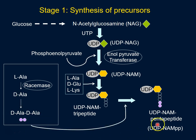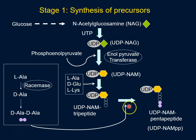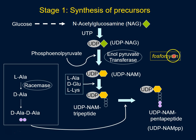There are two potential places where we can shut down this stage of cell wall synthesis. The first is phosphomycin — an antibiotic commonly used for urinary tract infections.